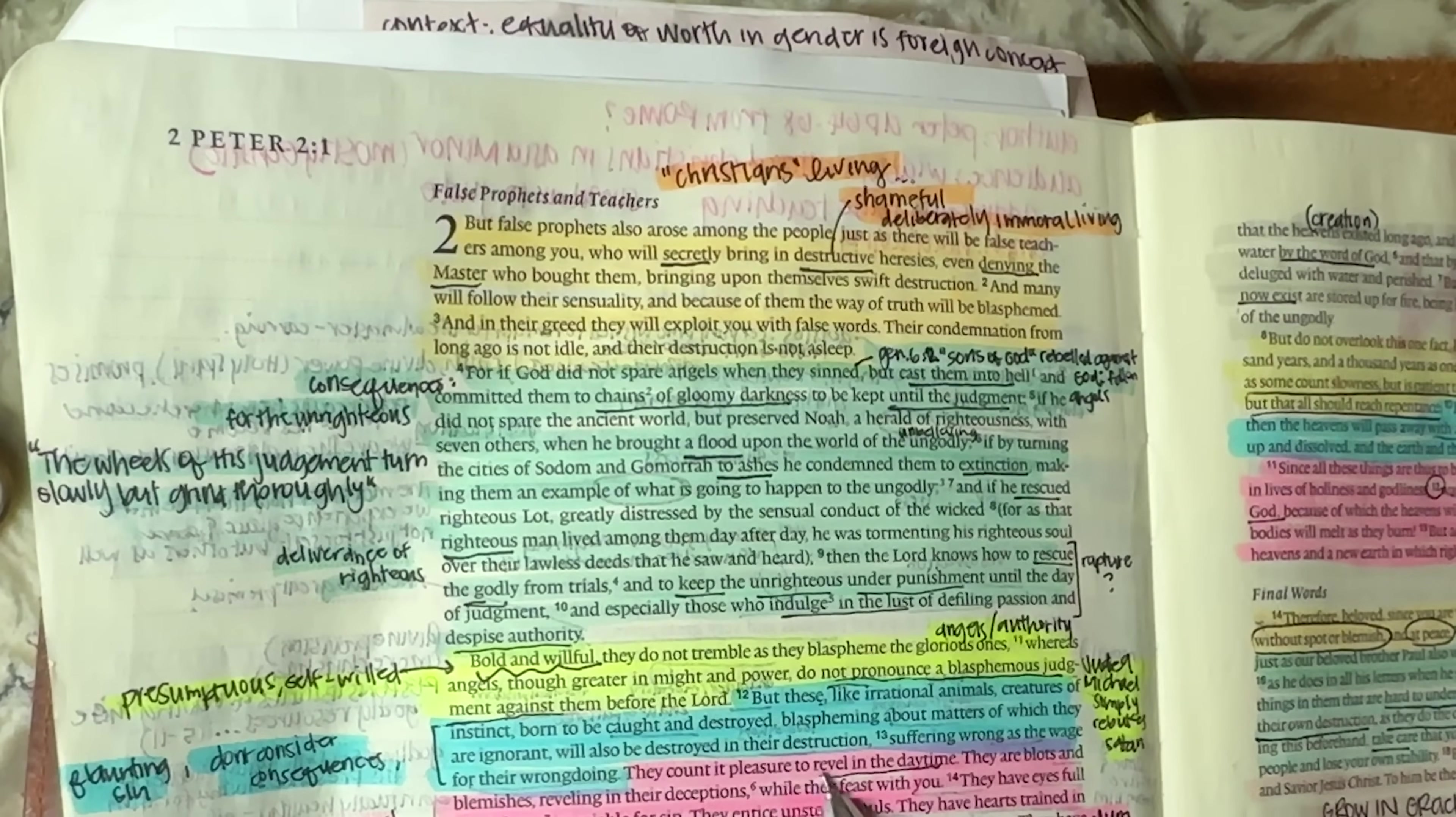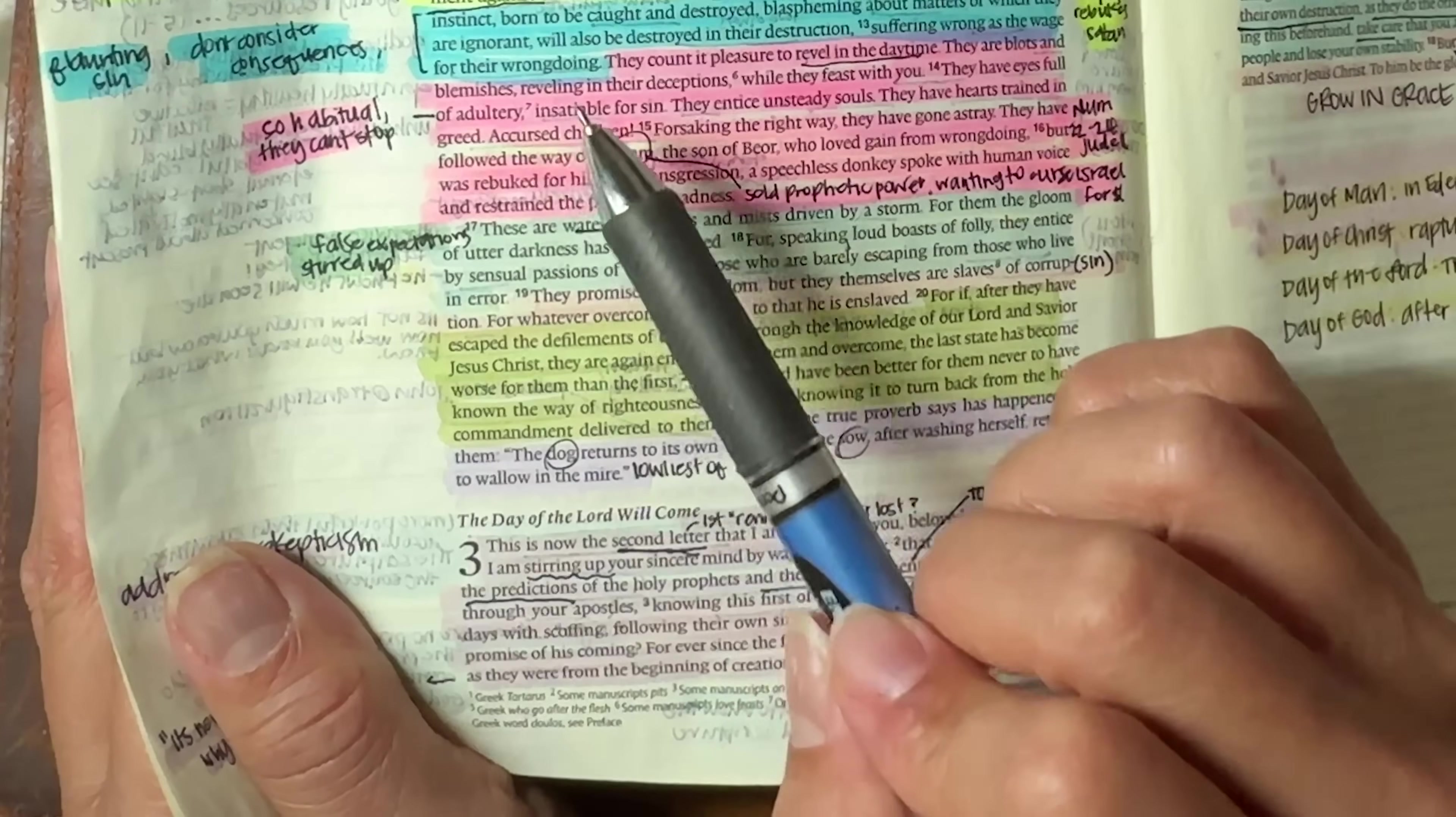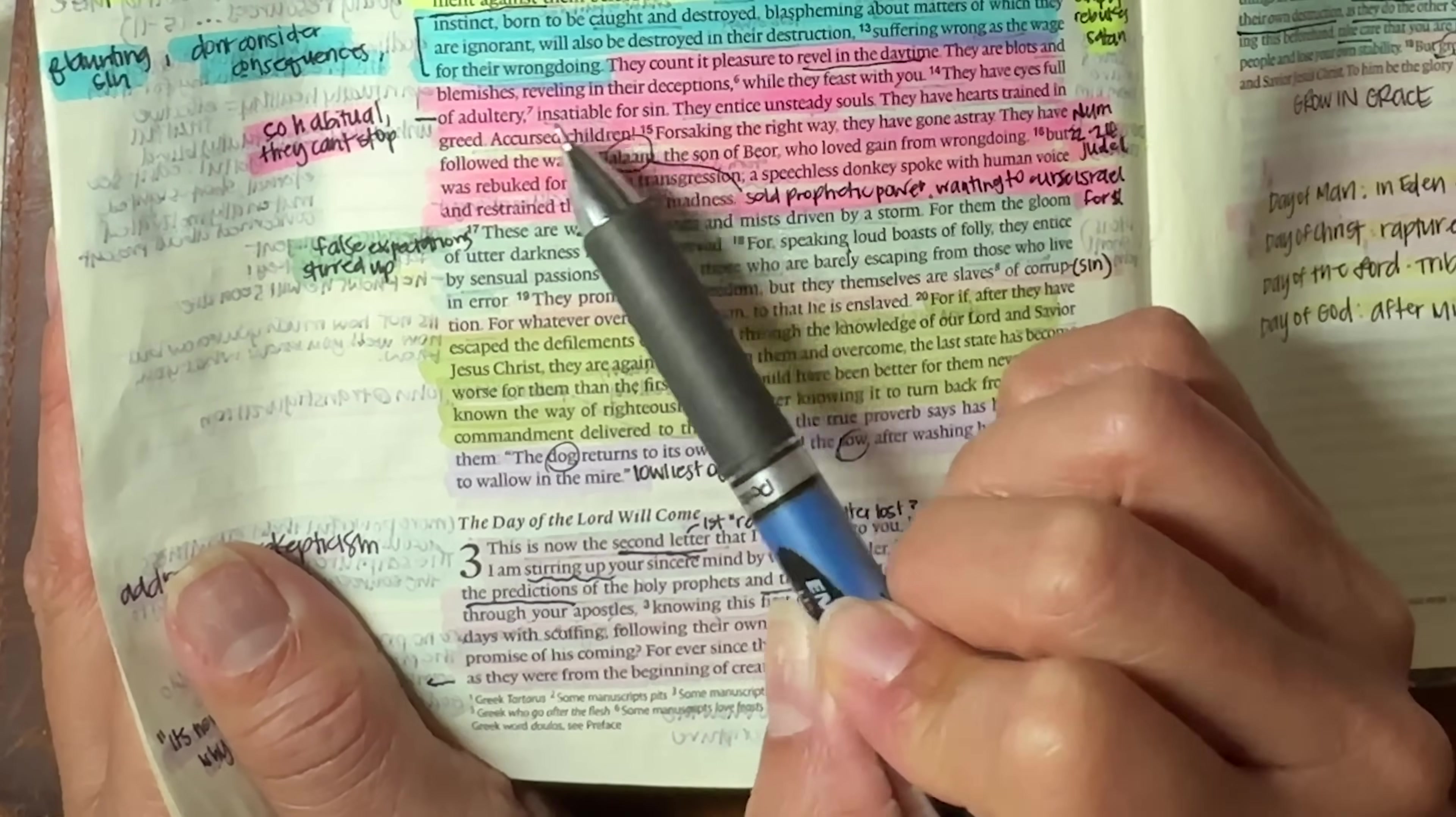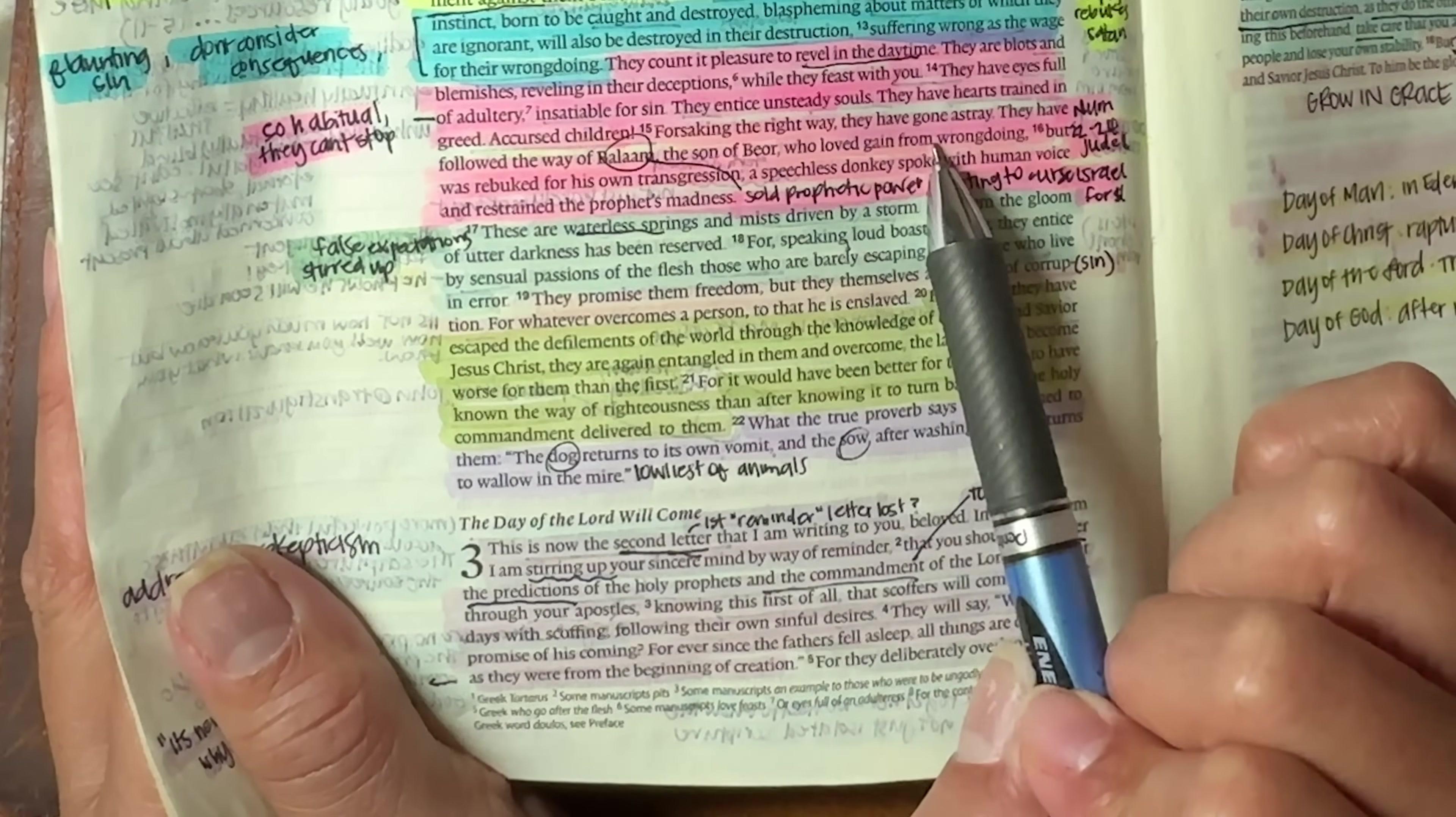They count it pleasure to revel in the daytime. They are blots and blemishes reveling in their deceptions while they feast with you. They have eyes full of adultery, insatiable for sin, meaning their sin is so habitual that they can't even stop. Like it's insatiable. They entice unsteady souls. They have hearts trained in greed, accursed children, forsaking the right way. They have gone astray.